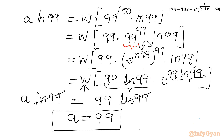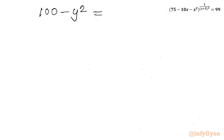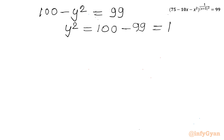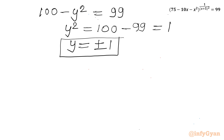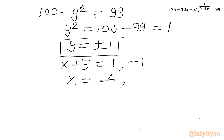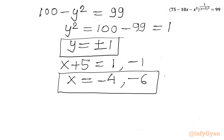Now a was our substitution for 100 minus y², so 100 minus y² equals 99, giving y² equals 1, so y equals plus or minus 1. Since y equals x plus 5, we have x plus 5 equals plus 1 or minus 1. Therefore x equals 1 minus 5 = negative 4, or x equals negative 1 minus 5 = negative 6. We have two real solutions: negative 4 and negative 6.